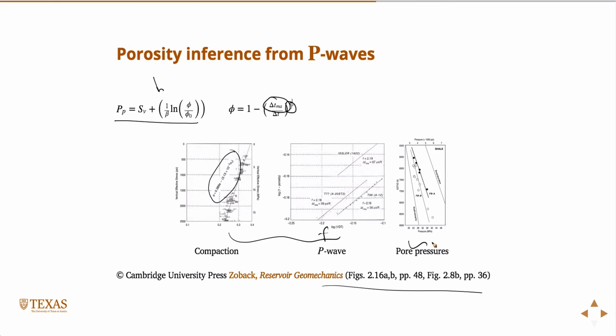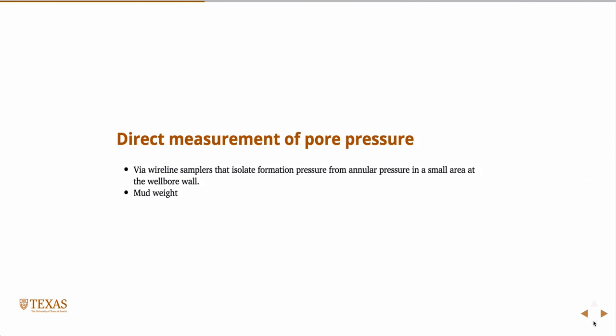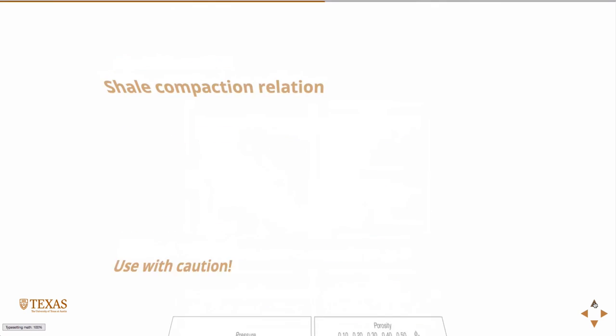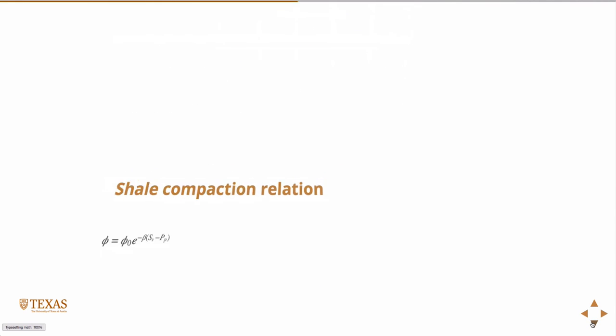What is beta? Beta is just a fitting parameter in that Athy's relationship. Well, you'd go to the lab and do those compaction experiments. You'd go to the lab and you'd do these experiments, and you'd collect the data. So that's what those dots are. That line is the best fit to those via this equation.